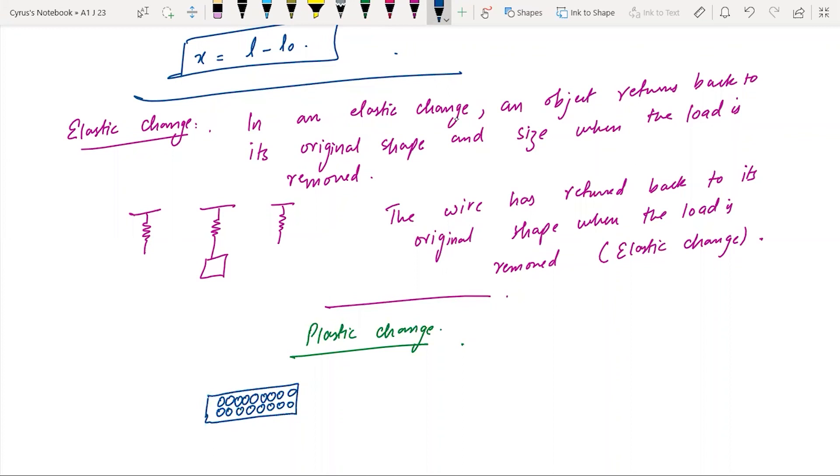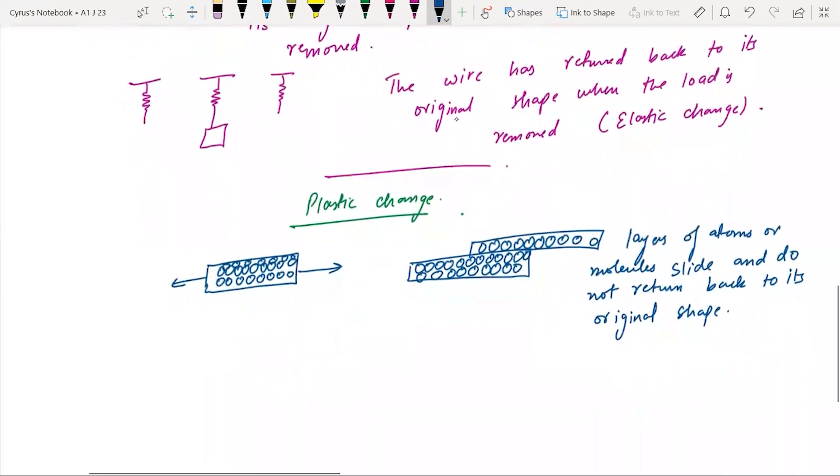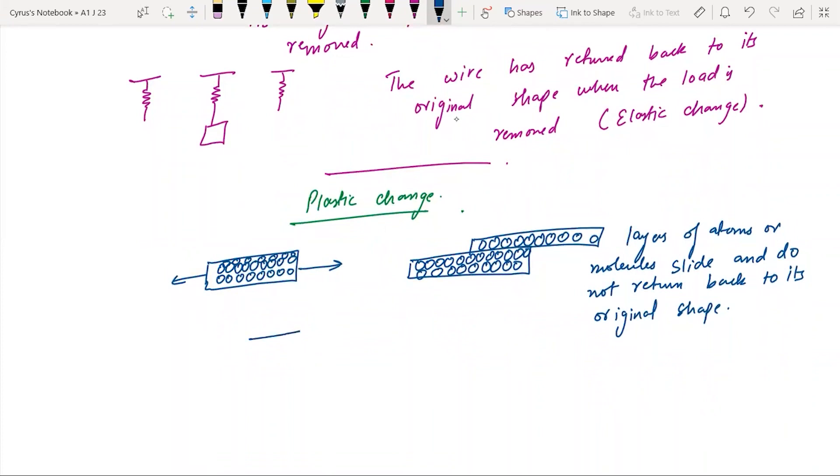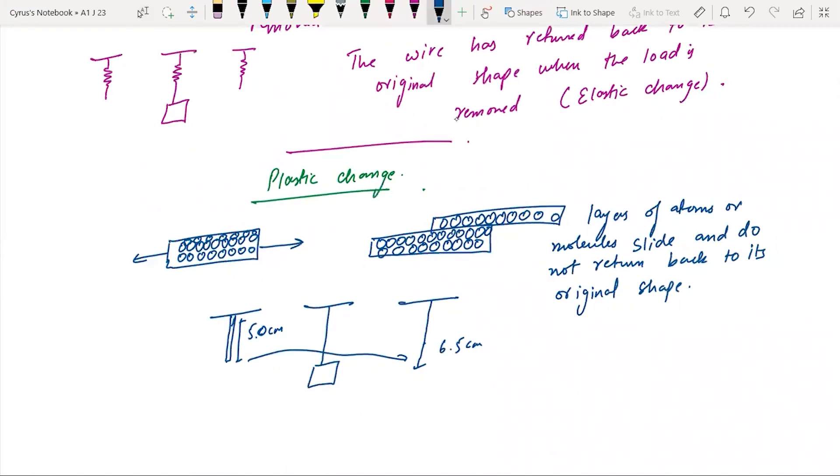In plastic change, the layers of atoms and molecules slide and do not return back to the original shape. I have here a wire and I have a load attached. For example, initially 5.0 cm, but when I remove the load it becomes 6.5 cm. There is a permanent extension here. We call this change the plastic change.